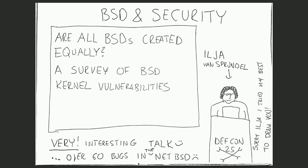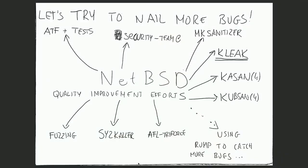Have you seen Ilya von Sprundrill's talk about BSD last year? It was at DEFCON and then at CCC in December. He was talking about whether all BSDs are created equally — basically an audit of the FreeBSD, NetBSD, and OpenBSD kernels. He found like 60 bugs in NetBSD. We weren't happy about that, but one developer fixed all 60 bugs overnight, which is a pretty good result. But we decided to do some quality improvements.